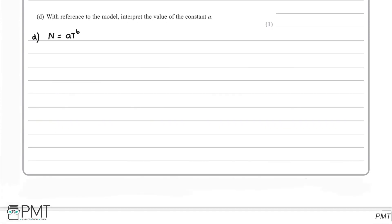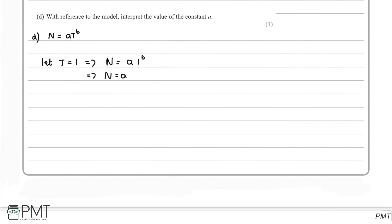For part d, we're asked to interpret the value of the constant a with reference to the model. Recalling n equals a·t to the power of b, if we let t equal 1 — representing one day after the start of the experiment — then n equals a times 1 to the power of b. Since 1 to the power of anything equals 1, we get n equals a. Therefore, a is the number of microbes one day after the start of the experiment.